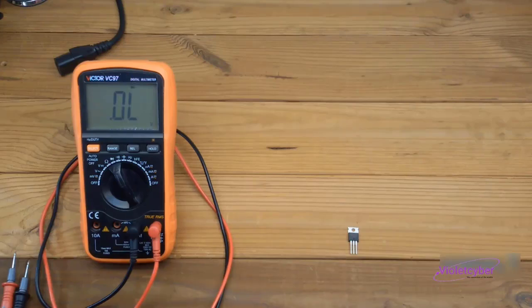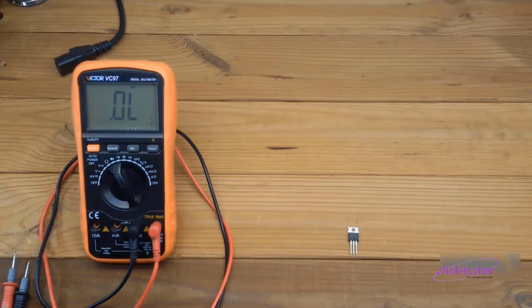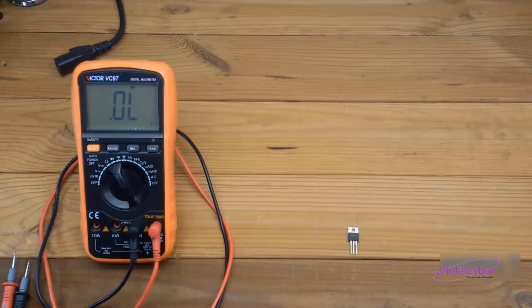If the MOSFET you're testing performs like this, it indicates that the MOSFET is working correctly, and you can use it in your circuits. It doesn't matter whether the MOSFET is removed from an existing circuit or newly purchased. If it behaves this way, it means it's functioning properly.